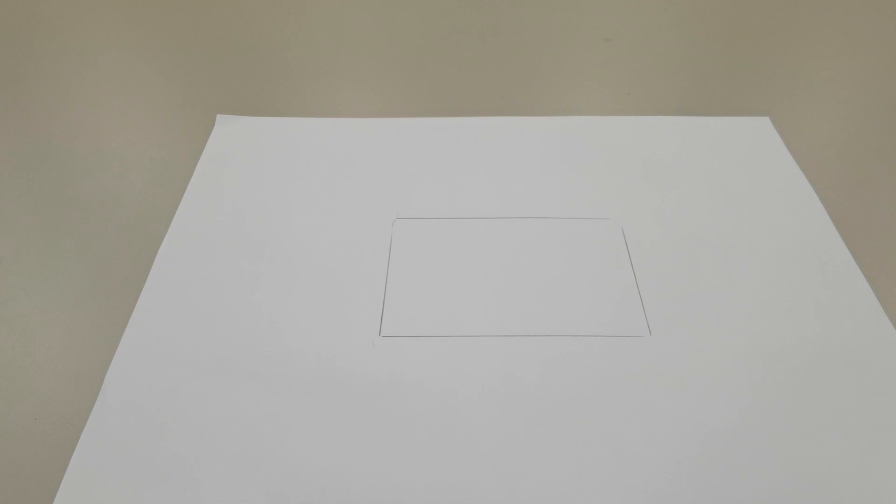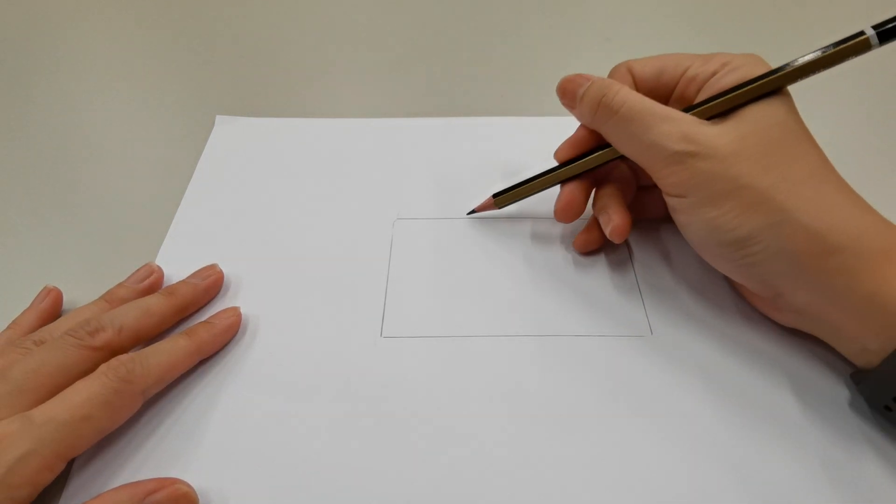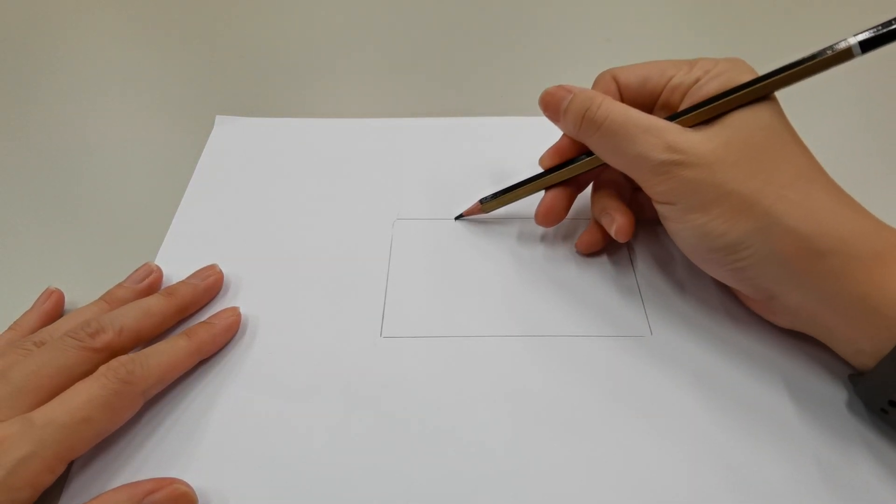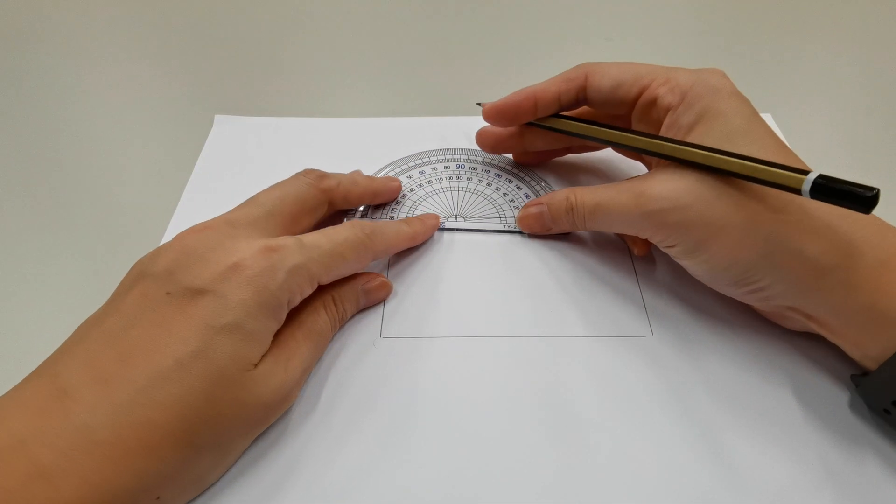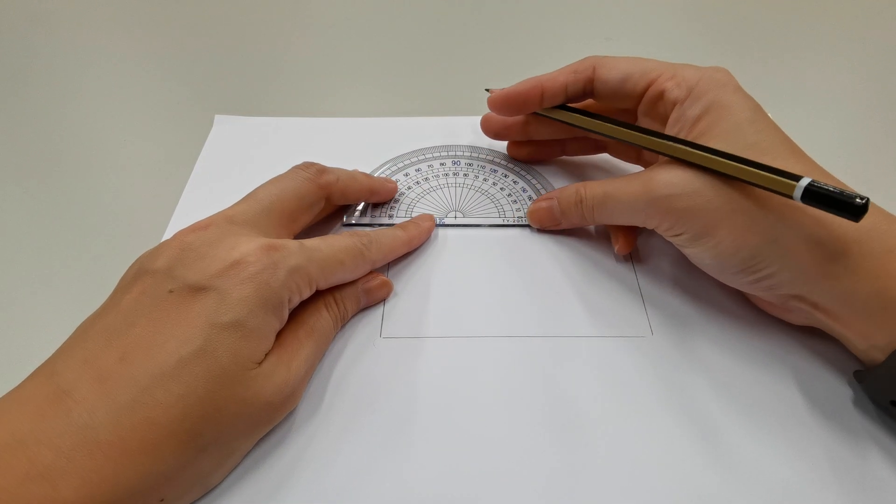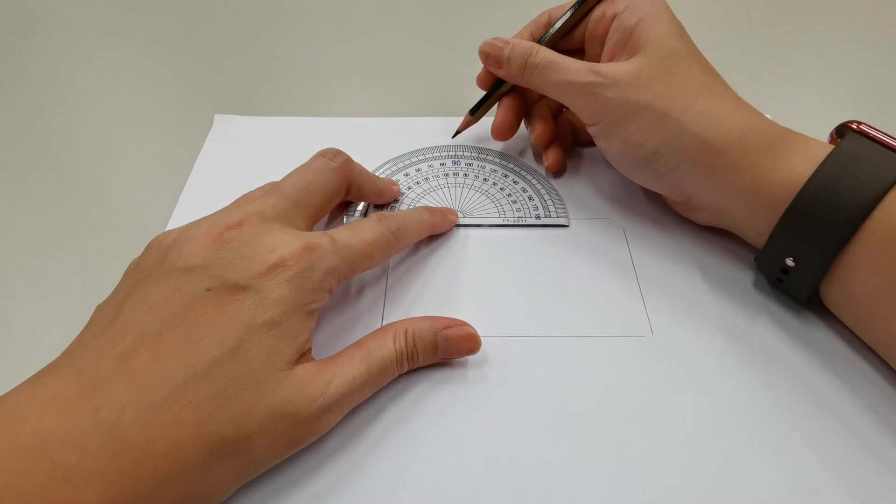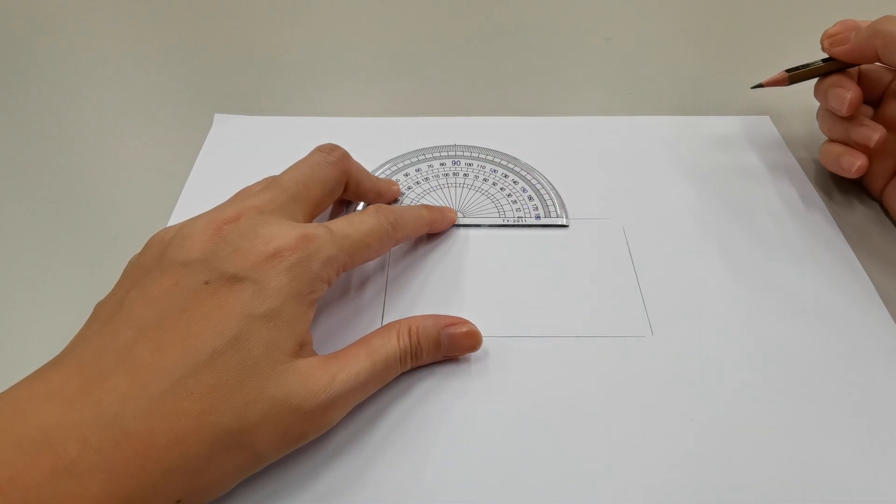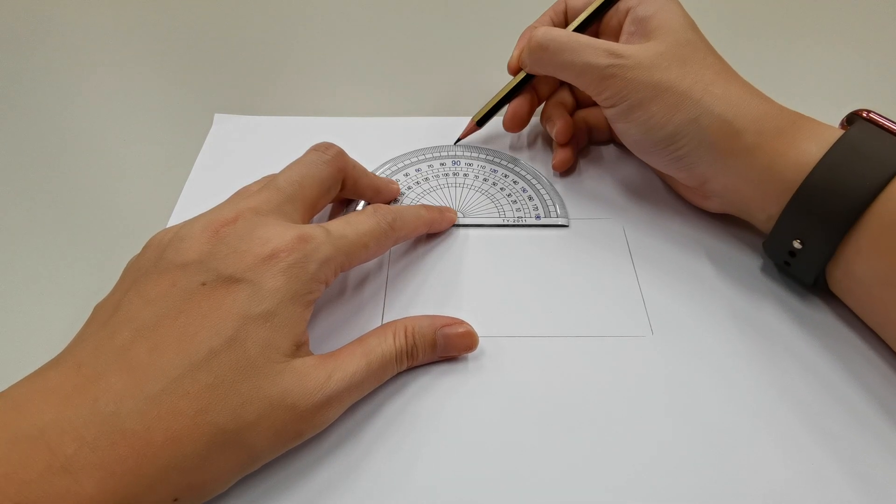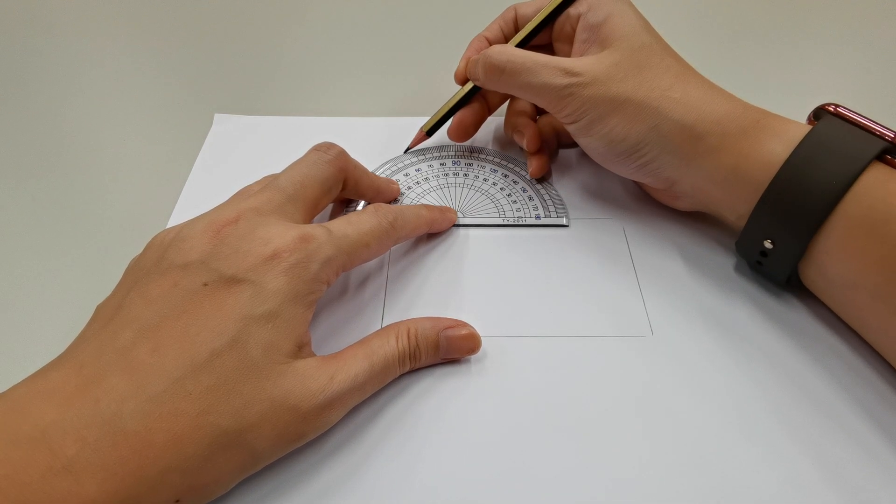Next, we're going to draw the incident ray. Make a marking somewhere here on one of the long edges. Using a protractor, we're going to measure out the normal line which is 90 degrees to the boundary and let's say the incident angle is 30 degrees. So, from the normal line, 30 degrees would be here.